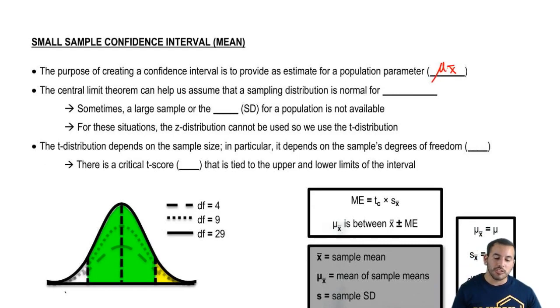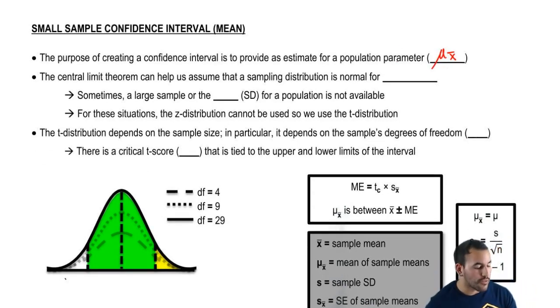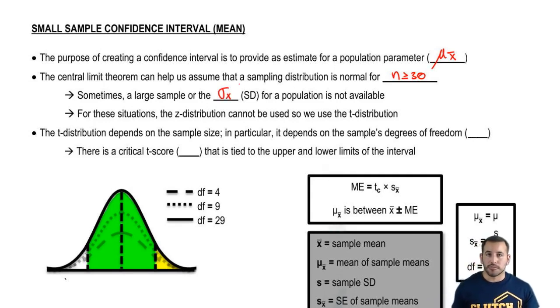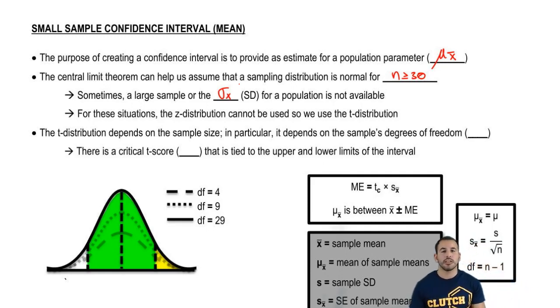The central limit theorem can help us assume that a sampling distribution is normal for sample size greater than or equal to 30. However, sometimes a large sample size or the population standard deviation is not available to you. In this situation, the z distribution cannot be used because the z distribution basically works off the assumption that the distribution is normal. So for a sample size greater than or equal to 30, that sampling distribution is approximately normal, so it's okay.